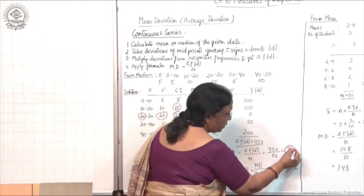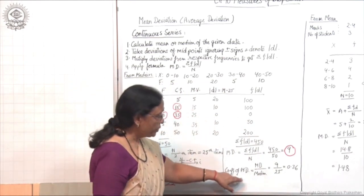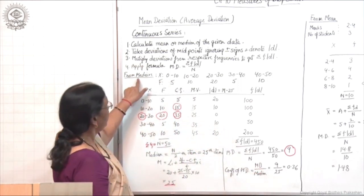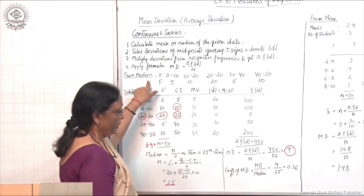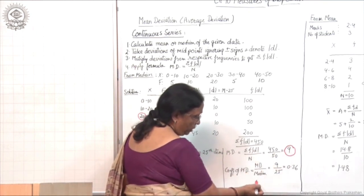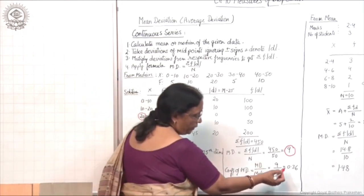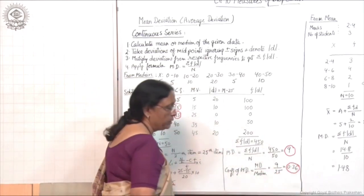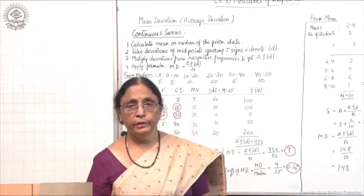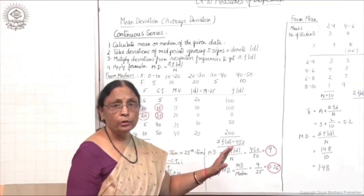Mean deviation = 9. Coefficient of mean deviation = MD / median = 9/25 = 0.36. This is the calculation of MD through median.